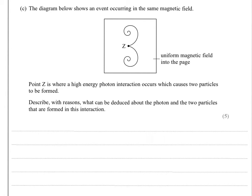Part C, the diagram below shows an event occurring in the same magnetic field. So again, we've got a uniform magnetic field into the page. It says point Z is where a high energy photon interaction occurs, which causes two particles to be formed. So this is obviously some kind of pair production here. Describe with reasons what can be deduced about the photon and the two particles that are formed in the interaction.